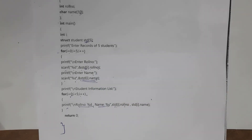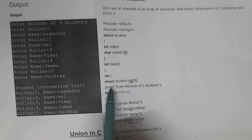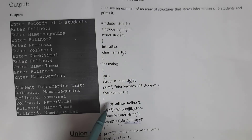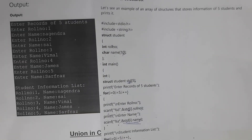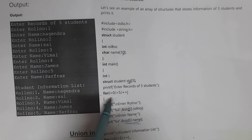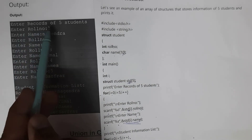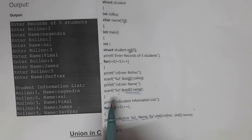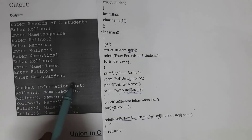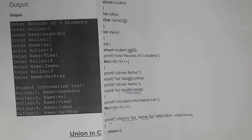To generate output, I take another for loop (i=0; i<5; i++), and inside it write printf("%d %s", std[i].roll_number, std[i].name). Whatever names and roll numbers you entered will be displayed on screen. The output shows 'Enter record of five students', then after entering the details, another for loop displays the student information list — for example, roll number 1, Nagendra. This is how we use arrays of structures.